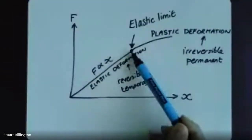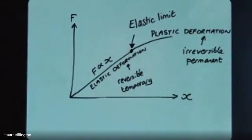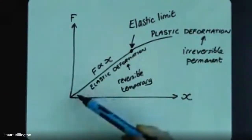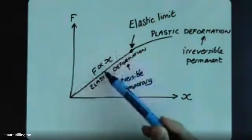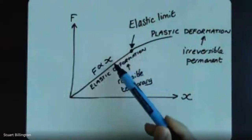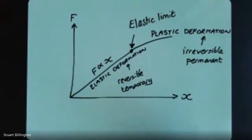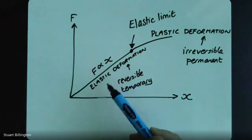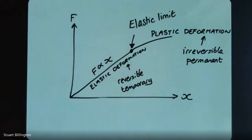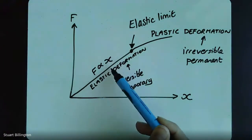This elastic limit is quite an important point - something happens to the material at the elastic limit, and it's happening on an atomic scale. During this part of the stretching, all that's happening is that the atomic bonds holding the atoms together in the material are just stretching. The same thing happens when you compress objects - we're just flexing the atomic bonds.